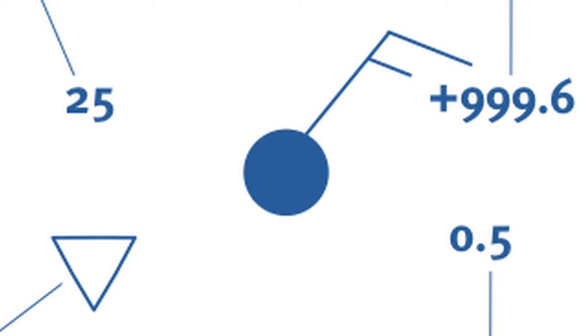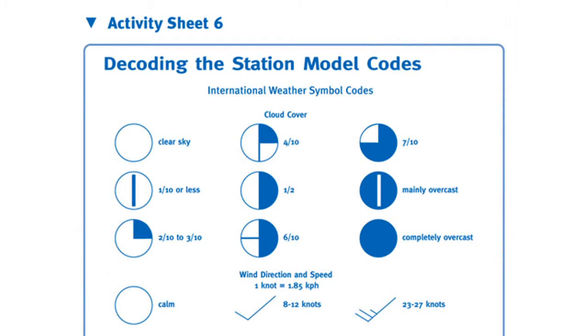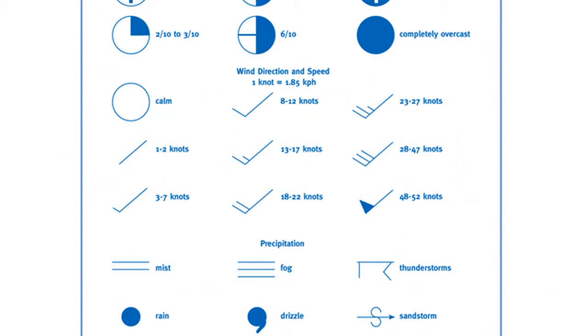A station model card begins with a circle in the center. The center of the circle is filled in according to the amount of cloud cover. Coming into the circle is a line designating the direction from which the wind is coming. On the end of the line are perpendicular barbs indicating wind speed. Each long bar represents 10 knots of wind, half lines represent 5 knots of wind, and a pennant at the end means 50 knots of wind.